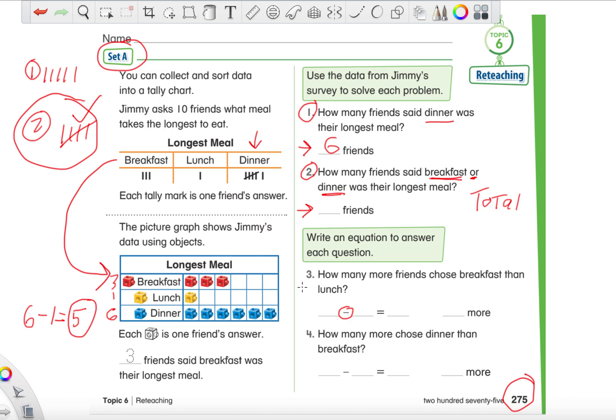Let's go over number 3. I'm going to read it, I want you guys to try it, and then we'll go over it together. It says, how many more friends chose breakfast than lunch? So you're comparing the red cubes and the yellow cubes. Go ahead and give that one a try. How many more friends picked breakfast than lunch? We're comparing. Give you guys a quick minute. If you are still working on this, as always, pause the video. If not, let's make sure you did the correct work.